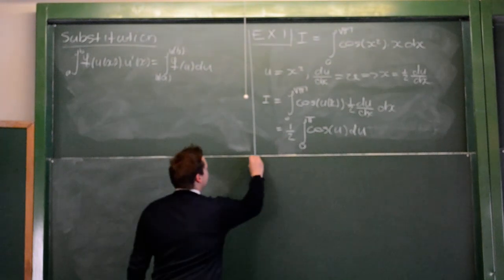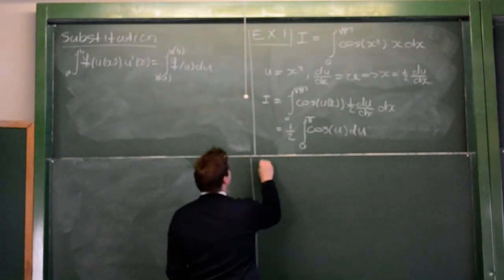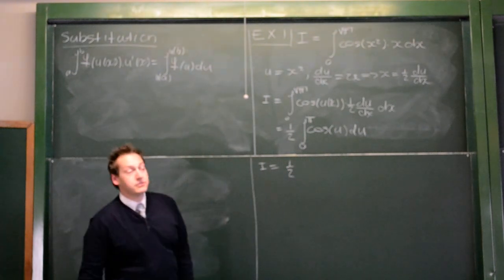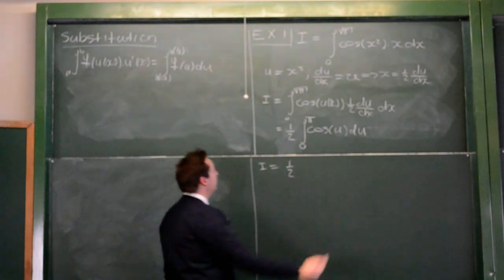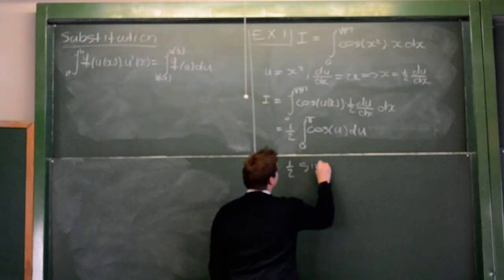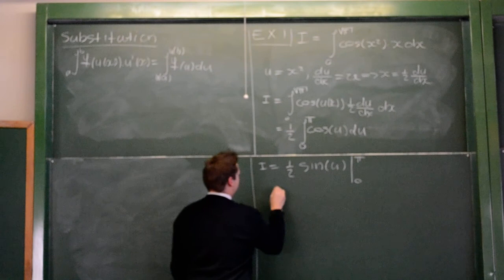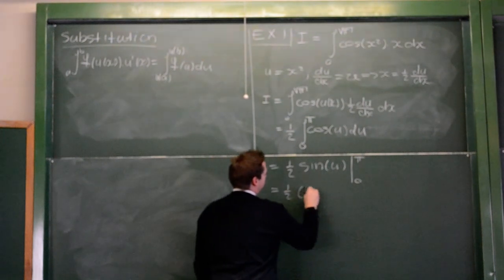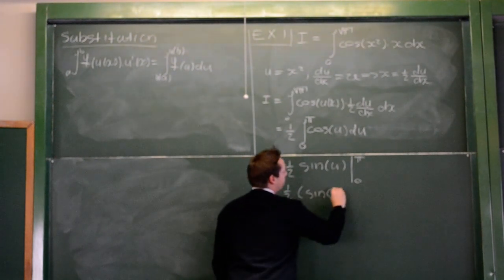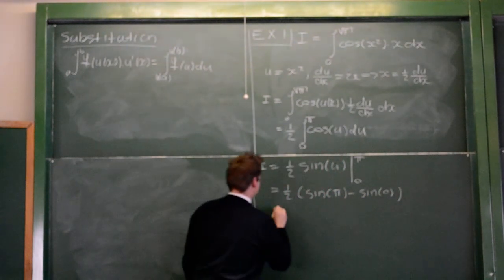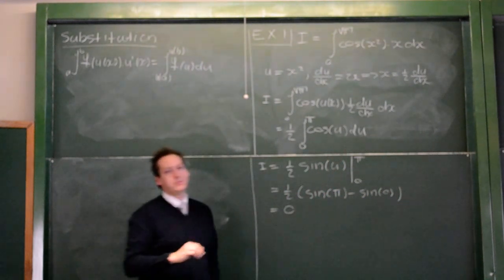Now, we're going to have this integral. We see that it's a half, and the integral of cos will be sin. Sin u, and our bounds 0 to pi. So, this would be a half times sin pi minus sin 0, which is, of course, just 0.